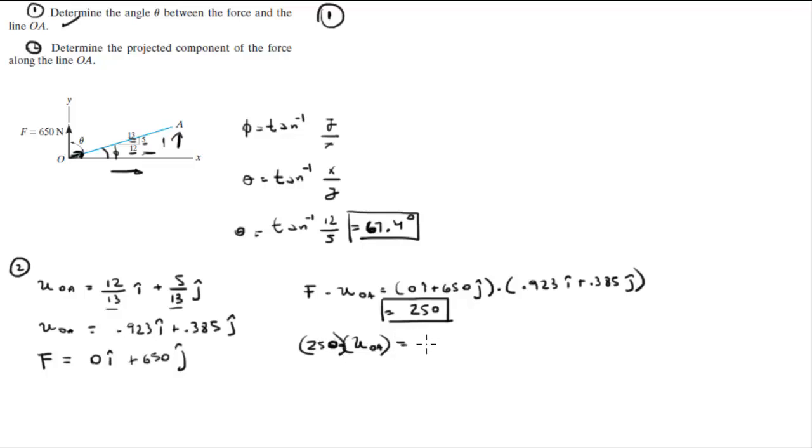And it comes out to be 230.1i plus 96.2j. Final answer for the Cartesian vector form of the projected component. Final answer for the magnitude of the projected component along OA. And final answer for the degrees of theta.